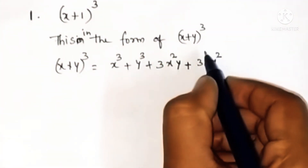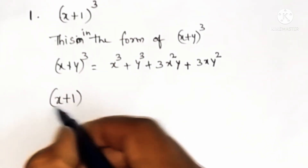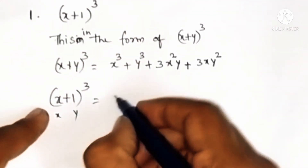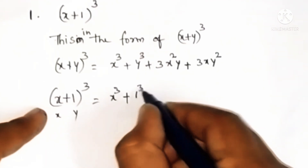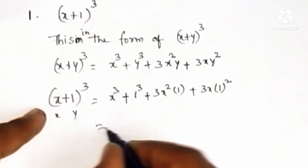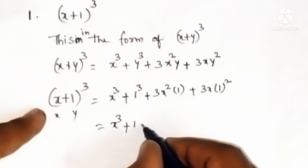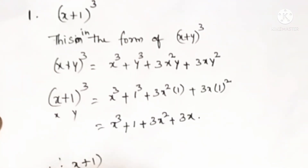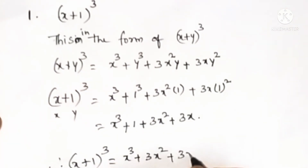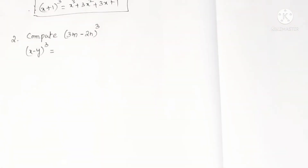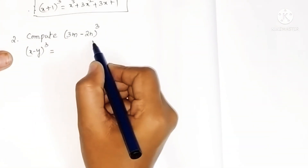In x plus one whole cube, in the place of x we have x only, and in the place of y we have one. So simply substitute: x cube plus one cube plus 3 x squared into one plus 3 x into one squared. That gives x cube plus one plus 3 x squared plus 3 x. Written in descending order of degree, this is the answer.